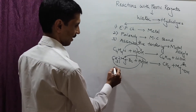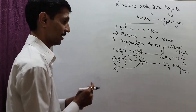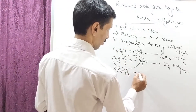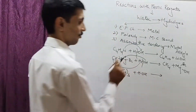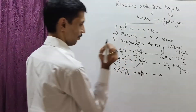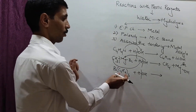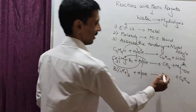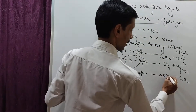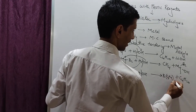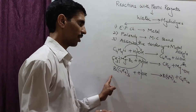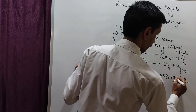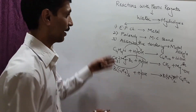Another example: tri-n-butylboron, (C₄H₉)₃B, treated with one molecule of water. The bond between H and OH breaks; H combines with one C₄H₉ group to give butane (C₄H₁₀). The remaining product is dibutylboron hydroxide, B(C₄H₉)₂OH. So tri-butylboron becomes di-butylboron in this partial hydrolysis.